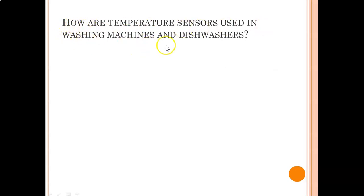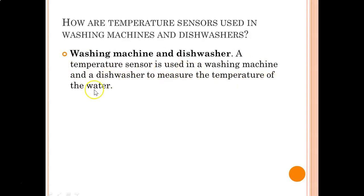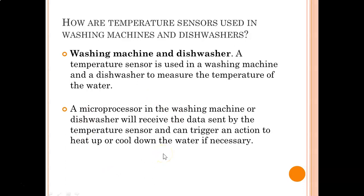How are temperature sensors used in washing machines and dishwashers? Temperature sensors are used in a washing machine and a dishwasher to measure the temperature of the water. A microprocessor in the washing machine or dishwasher will receive the data sent by the temperature sensor and can trigger an action to heat up or cool down the water if necessary, maintaining the temperature at a certain point.